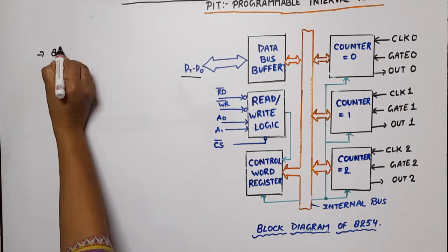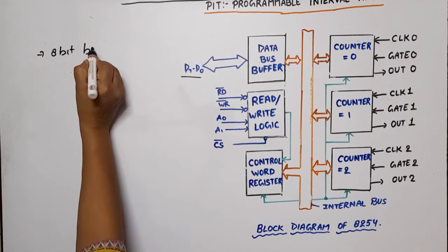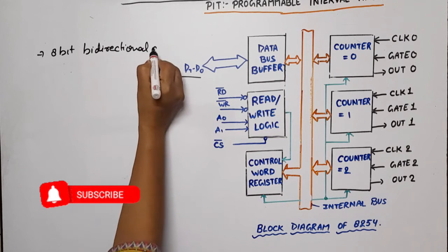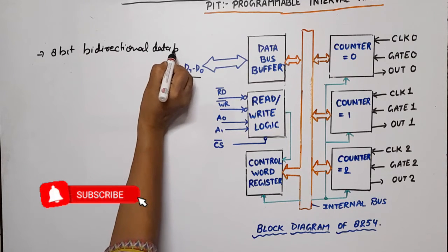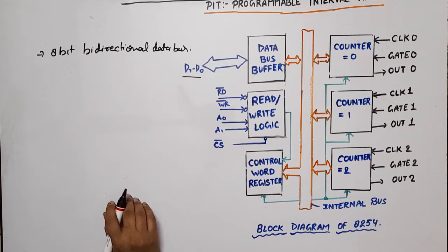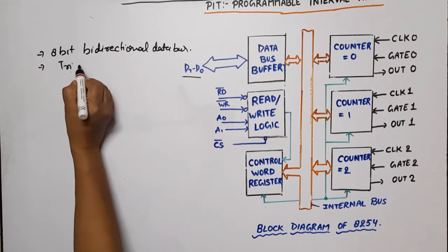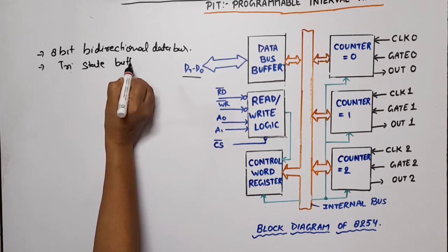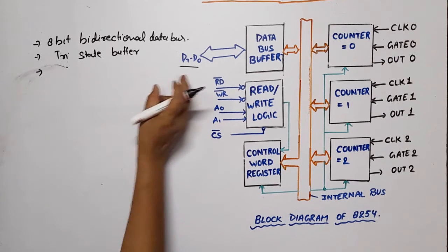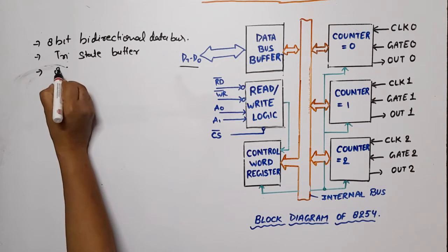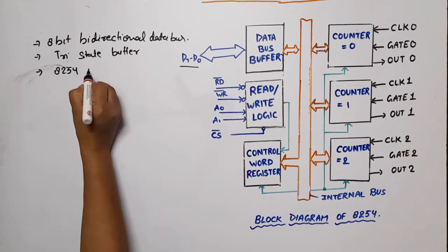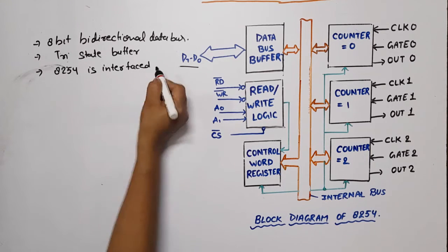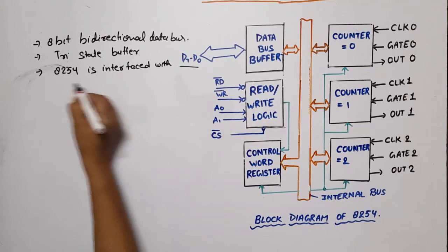This is 8 bit bidirectional data bus. Now what is data bus buffer? It means that the buffer used here, they are tri-state buffer. Now what is function? By using this data bus,